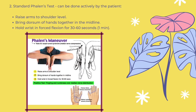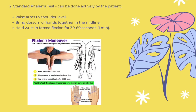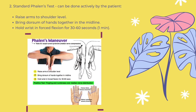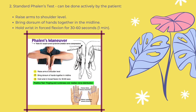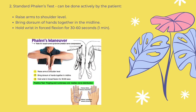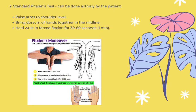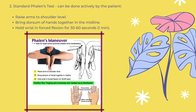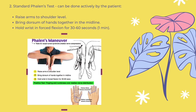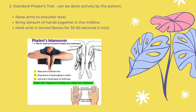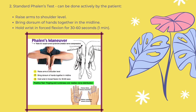Secondly, the standard Valen test can be done actively by the patient. The patient raises the arms to shoulder level and brings the dorsal surfaces of the hands together in the midline. The wrist must then be held in forceful flexion for 30 to 60 seconds.